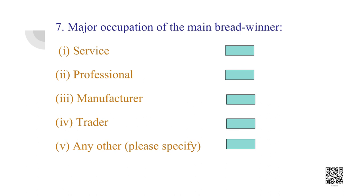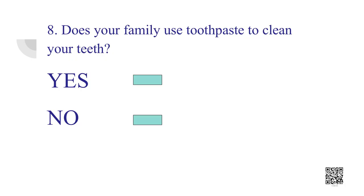The main breadwinner's occupation could be service, professional, manufacturer, trader, or any other activity which should be specified. We can also ask: does your family use toothpaste to clean your teeth? Because some people rely on traditional methods. The options might be yes or no.